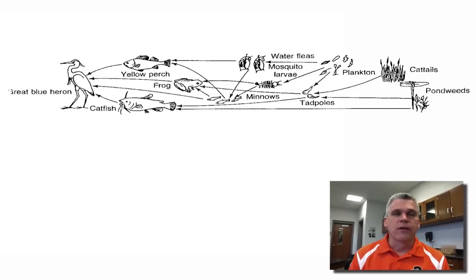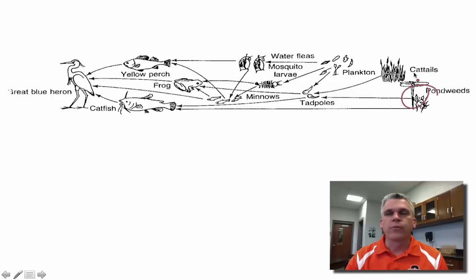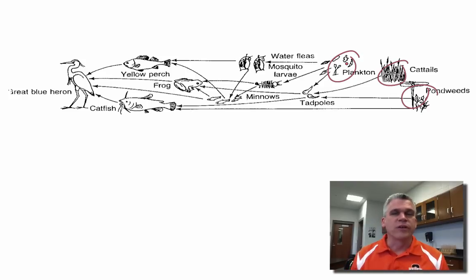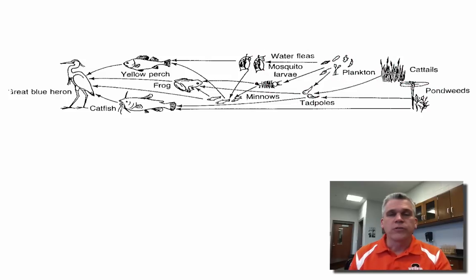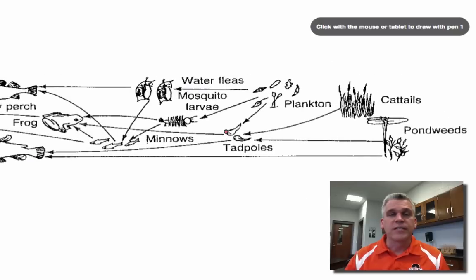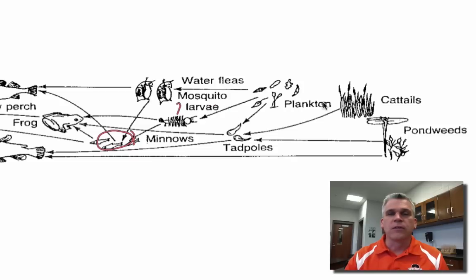Let's go back to our food web. We can see that there are many autotrophs — the pondweeds, the cattails, the plankton. These are all our primary producers, absorbing light energy from the sun and producing food. Our primary consumers are the tadpoles, the mosquito larvae, and the water fleas because they get their energy directly from these autotrophs. We also see examples of secondary consumers, like the minnows, which ate the mosquito larvae that ate the plankton.